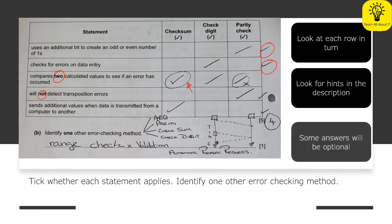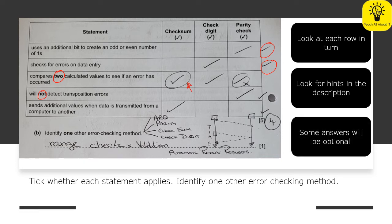And then finally, some of the answers will be optional, so you can see this one where I have the arrow pointing to it just here. This one was an optional answer. If you had put a tick, you would have got the mark right. If you didn't put a tick, you would have got the mark right. But these are very few and far between.